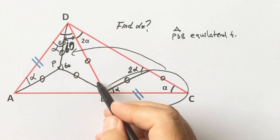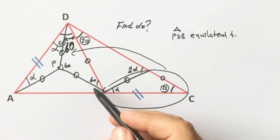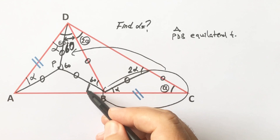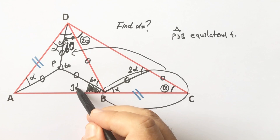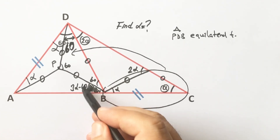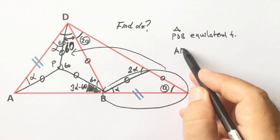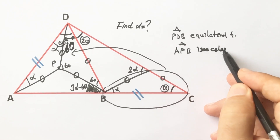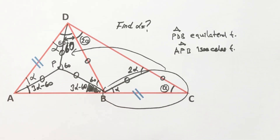So these angles must be 60 degrees. We know that two interior angles equal one exterior angle, so this angle must be three alpha minus 60 degrees. This triangle is an isosceles triangle, therefore this angle here must also be three alpha minus 60 degrees.